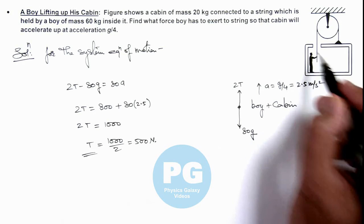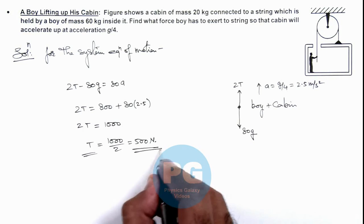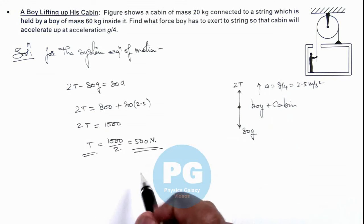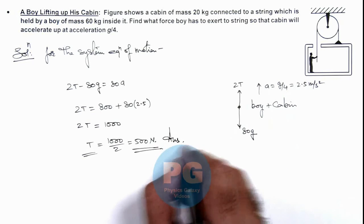So the boy has to exert a force of 500 newton on the string to keep the system going up at acceleration g by 4. So this is the final result of the problem.